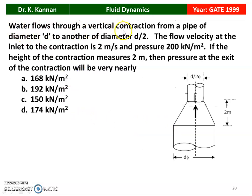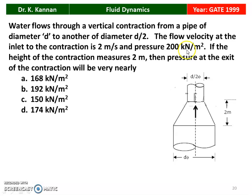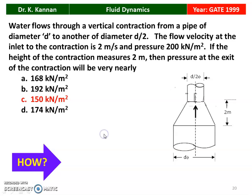Next question: water flows through a vertical contraction from a pipe of diameter D to another of diameter D/2. The contraction height is 2 meters. The flow velocity at the inlet of the contraction is 2 meters per second and pressure is 200 kilopascal per meter square. If the height of the contraction is 2 meters, what is the pressure at the exit of the contraction? The correct option is 150 kilopascal per meter square.